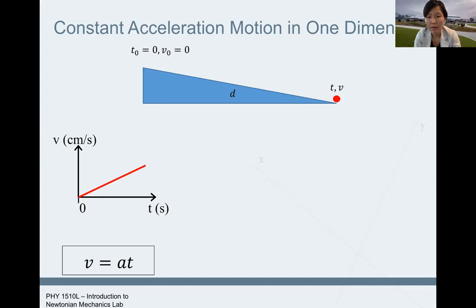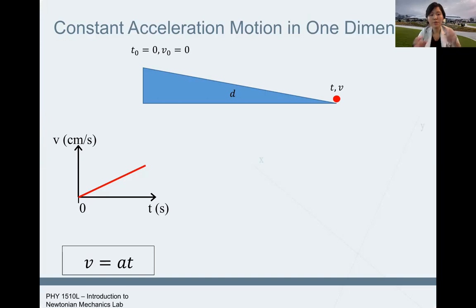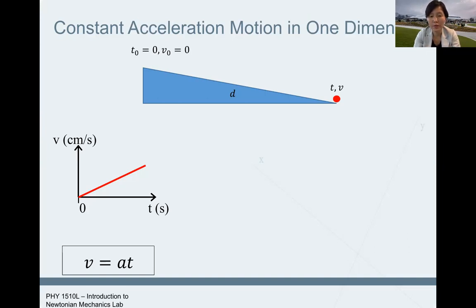You can look at the velocity-time graph. If you try to predict what the graph will look like theoretically, the velocity-time graph would be a straight line because it's a constant acceleration — velocity will increase at a steady rate. The slope is a constant slope indicating a constant acceleration. So if you collect your data and plot your velocity over time, you should get a straight line, and that slope will tell you how big the acceleration is when your object is being released off the ramp.